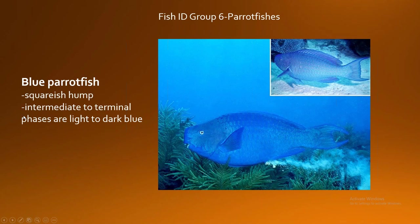One thing I want to mention — all of the fish we're looking at tonight are shown in their intermediate to terminal phases, which is what these fish look like when they are fully mature adults. A lot of tropical fish will change colorations and patterns to a certain degree throughout their various life phases, but for our purposes, to keep things smooth and simple, we're talking about them only as adults.